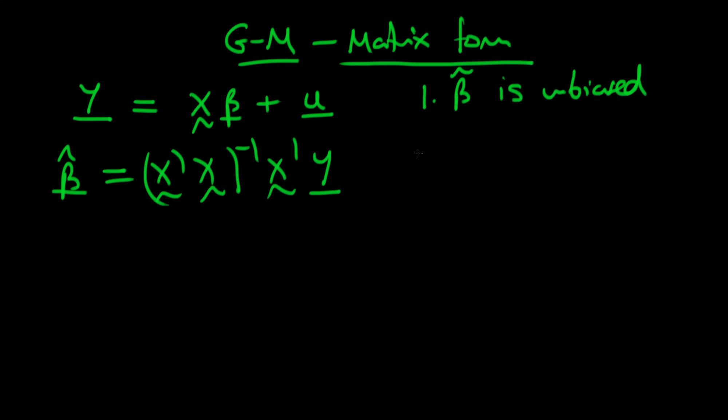The Gauss-Markov Theorem is about what are the conditions under which least squares estimators are BLUE, and one of the components of being BLUE is that it has to be unbiased. So first of all we demonstrate the conditions necessary for beta tilde to be unbiased.